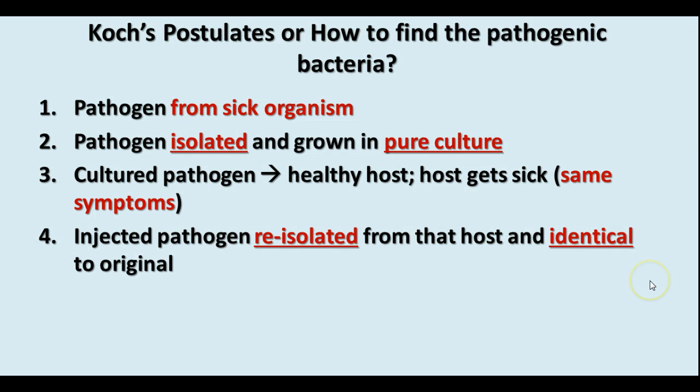Koch's postulates are a series of rules to figure out which bacterium causes which disease. There are four basic steps: the pathogen must be found in the sick organism and not a well one; that pathogen can be isolated and grown in pure culture; the cultured pathogen can then be transmitted to a healthy host, producing the same symptoms; and then you can re-isolate that pathogen from the host and find it's identical to the original pathogen.